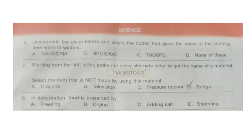Next section is Science. Question 6: Unscramble the given letters and select the option that gives the name of the clothing item worn in winter. Look at the options — you can also write down your answer in the comment section. The correct answer is option A: Cardigan.